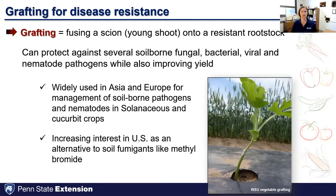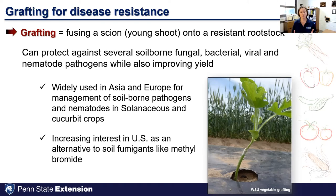Grafting is another option in terms of host resistance. We're seeing more growers using grafted plants — you can graft plants for soil-borne pathogens, nematode issues, and even general plant vigor. The root stocks can help impart resistance to various pathogens onto the scion. This is especially relevant in high tunnel production where you're trying to maximize yield, and in situations where we don't tend to see as much crop rotation, such as in a high tunnel. We're seeing more grafting with tomatoes and cucumbers.